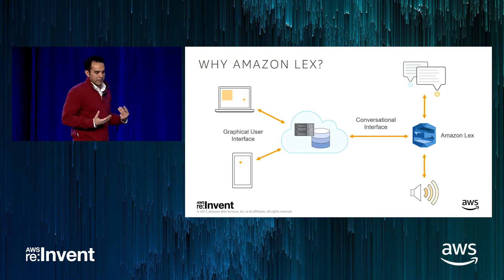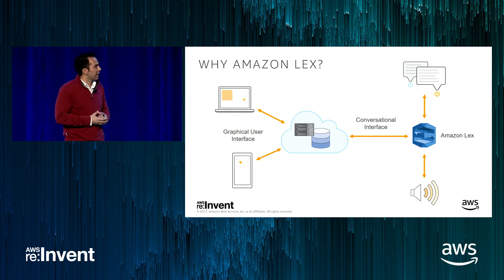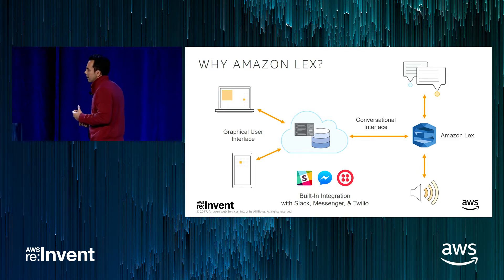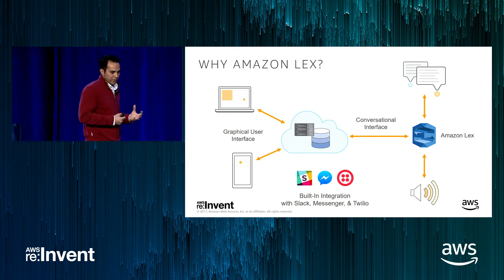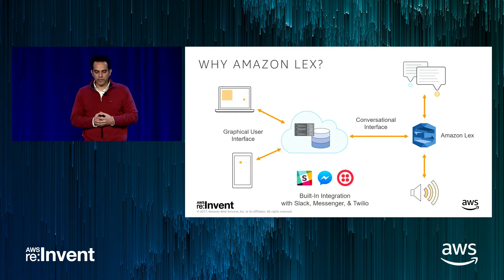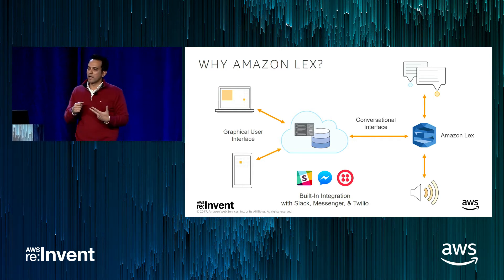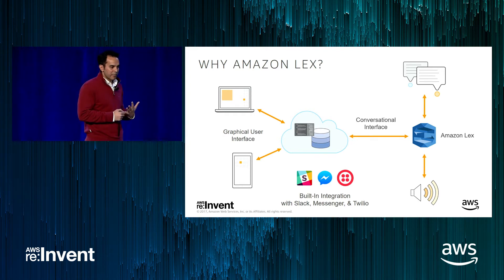The main AWS service that provides this capability and lets you build these conversational interfaces is Amazon Lex. Amazon Lex lets you build this conversational interface but also gives you the capability to integrate with a few select third-party integrations. Right now we have integrations built in the console for Slack, Facebook Messenger, Twilio SMS, and we recently added Kik Messaging as well.